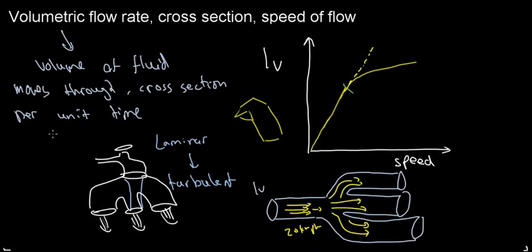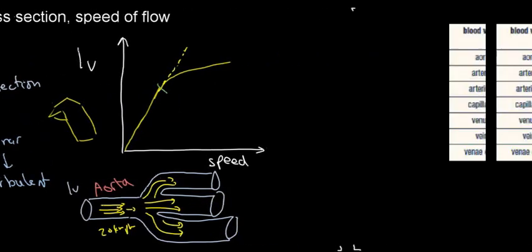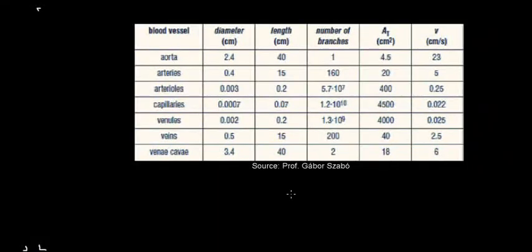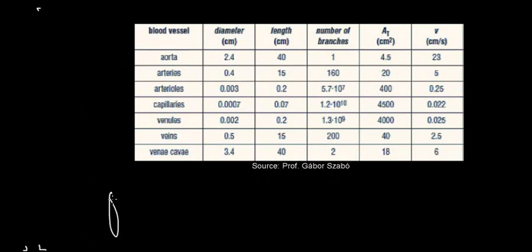This matters because in our body we have our aorta, which splits up and fans out to reach our different bodily compartments. I want to show something taken from Professor Gabor's lecture slide — and credit where credit is due. This depicts something quite interesting: we have the first branch, which is the aorta, and its cross-section is shown there.